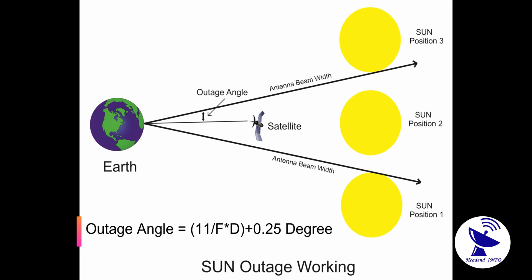The outage angle is equal to 11 divided by frequency into diameter, plus 0.25 degrees. Frequency represents the downlink frequency in gigahertz, and diameter represents the diameter of your receiving antenna.